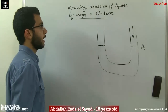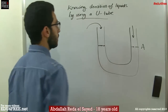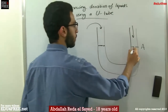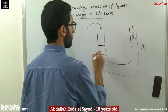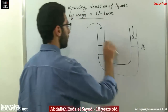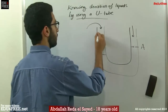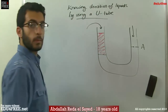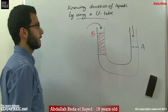Then we pour the other liquid. What happens is it will push the water at that end and the water will rise to the other end. This will be our new liquid. Let's call this point B.